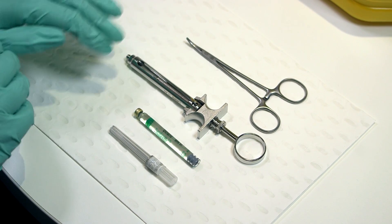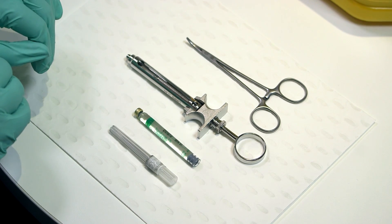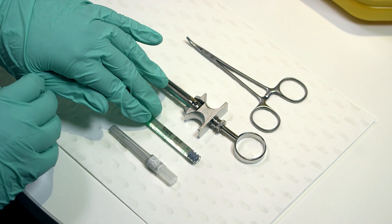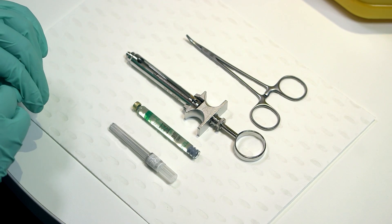So we have our forceps, our local anaesthetic syringe, our actual local anaesthetic carpule and our needle.